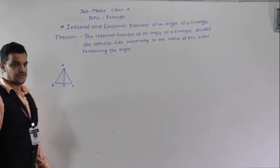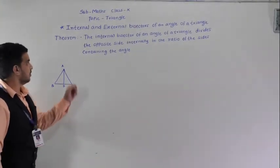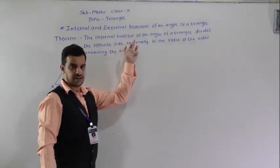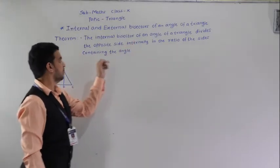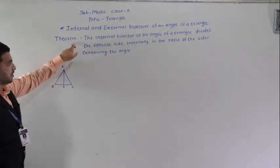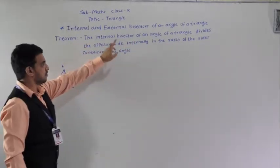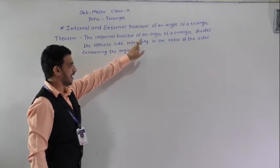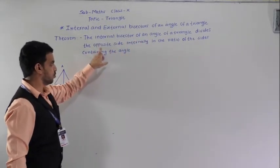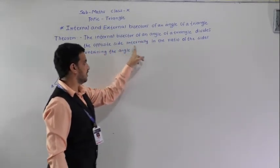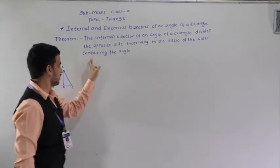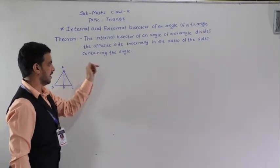Hello students, today we are going to learn internal and external bisectors of an angle of a triangle. The first theorem is: the internal bisector of an angle of a triangle divides the opposite side internally in the ratio of the sides containing the angle.